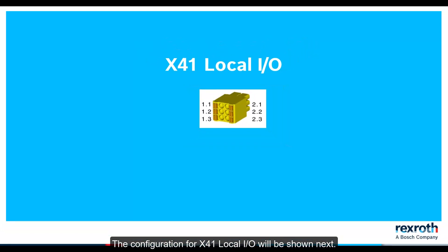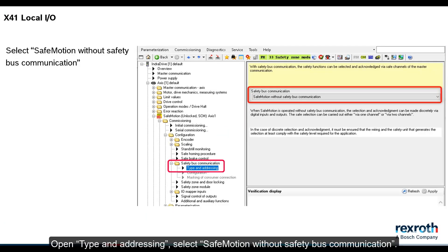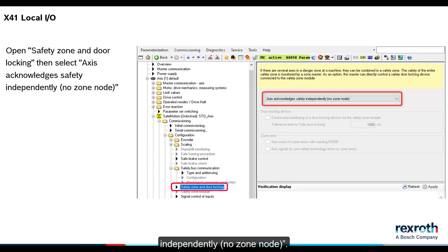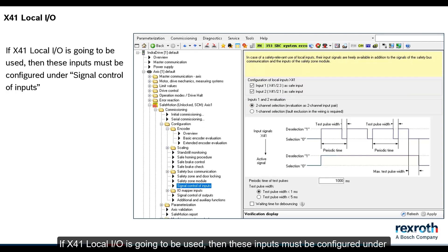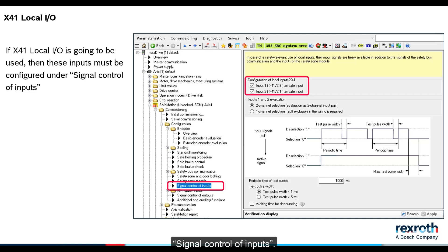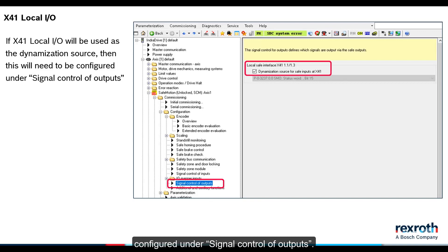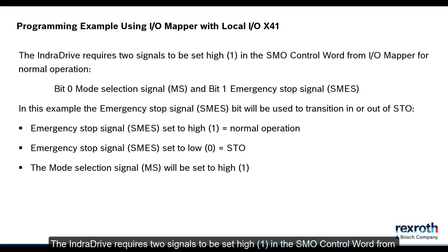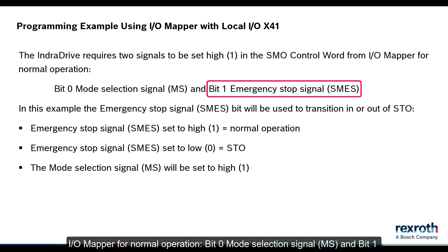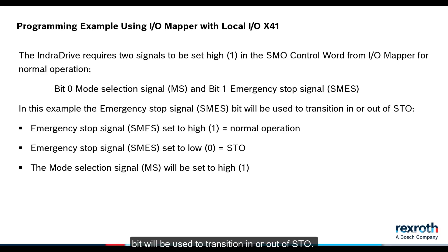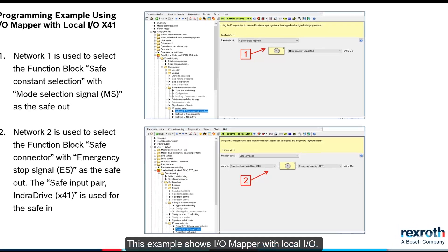The configuration for X41 local IO will be shown next. Open type and addressing. Select safe motion without safety bus communication. Open safety zone and door locking, then select axis acknowledges safety independently, no zone node. If X41 local IO is going to be used, then these inputs must be configured under signal control of inputs. If X41 local IO will be used as the dynamization source, this will need to be configured under signal control of outputs. The IndraDrive requires two signals to be set high in the SMO control word from IOMapper for normal operation: Bit 0, Mode Selection Signal MS, and Bit 1, Emergency Stop Signal SMES. In this example the SMES bit will be used to transition in or out of STO. This example shows IOMapper with local IO.